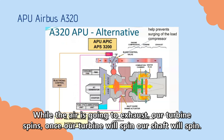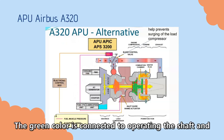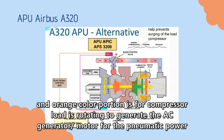The green color here is connected to the operating shaft. And the orange portion here is the compressor rod, which is rotating the AC generator for making the power — pneumatic power and electrical power.